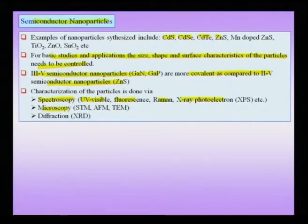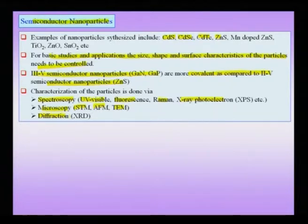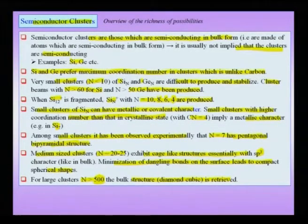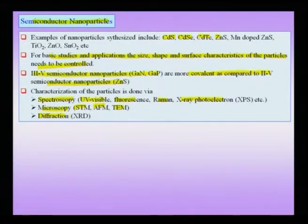Microscopy techniques to determine particle shapes and local defect structure include transmission electron microscopy, atomic force microscopy, and scanning tunneling microscopy. Diffraction studies including X-ray diffraction and electron diffraction can give not only particle size but also strain in the particles. For basic studies and applications, size, shape and surface characteristics of these particles need to be controlled. We will return to important particles like cadmium telluride, cadmium sulphide and cadmium selenide when discussing electronic properties. We can study pure elemental clusters like silicon and germanium, compound clusters, and compound semiconducting nanoparticles.